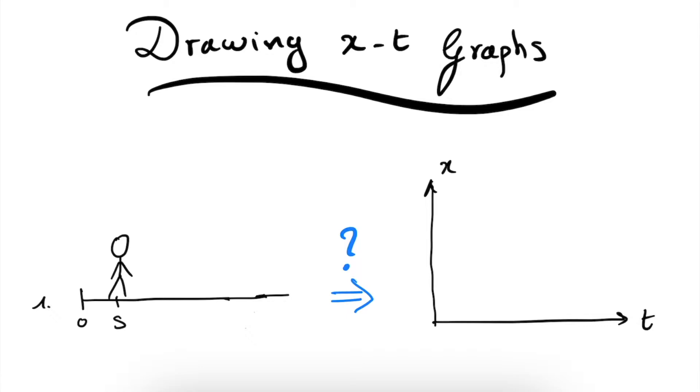So first of all, what is an XT graph? It is a graph with on the horizontal axis time and on the vertical axis space, so basically place. What does this now entail?